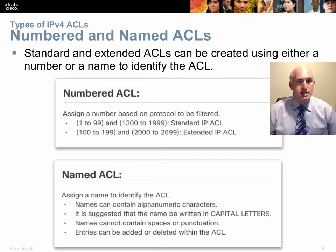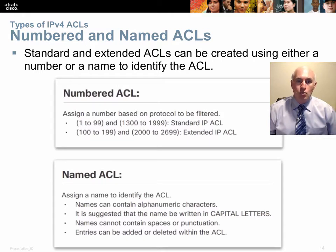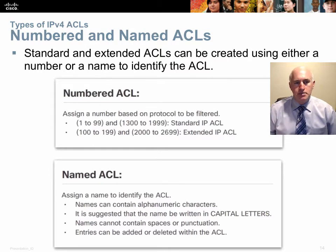Both standard and extended ACLs can be created either numbered or named. It's preferred today to use named ACLs where you can give them a meaningful name. We typically write these names in all capital letters — it's actually case-sensitive, but all caps makes it stand out and easy to identify when reviewing a 'show run'. Named ACLs must start with an alpha character, not a number.